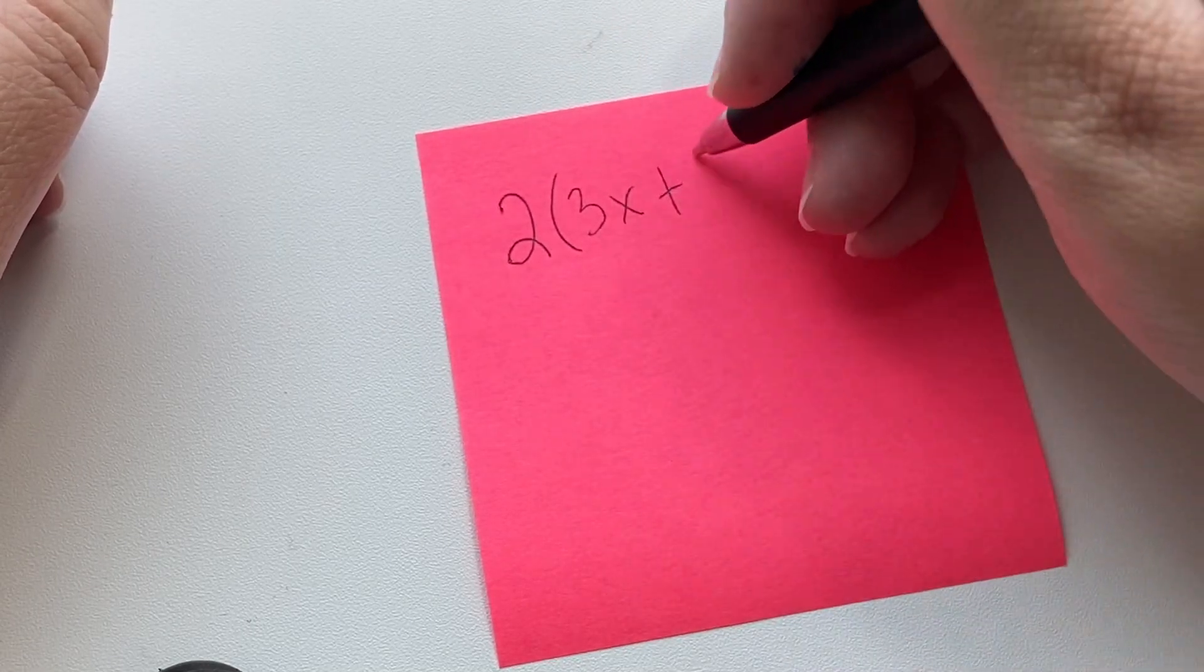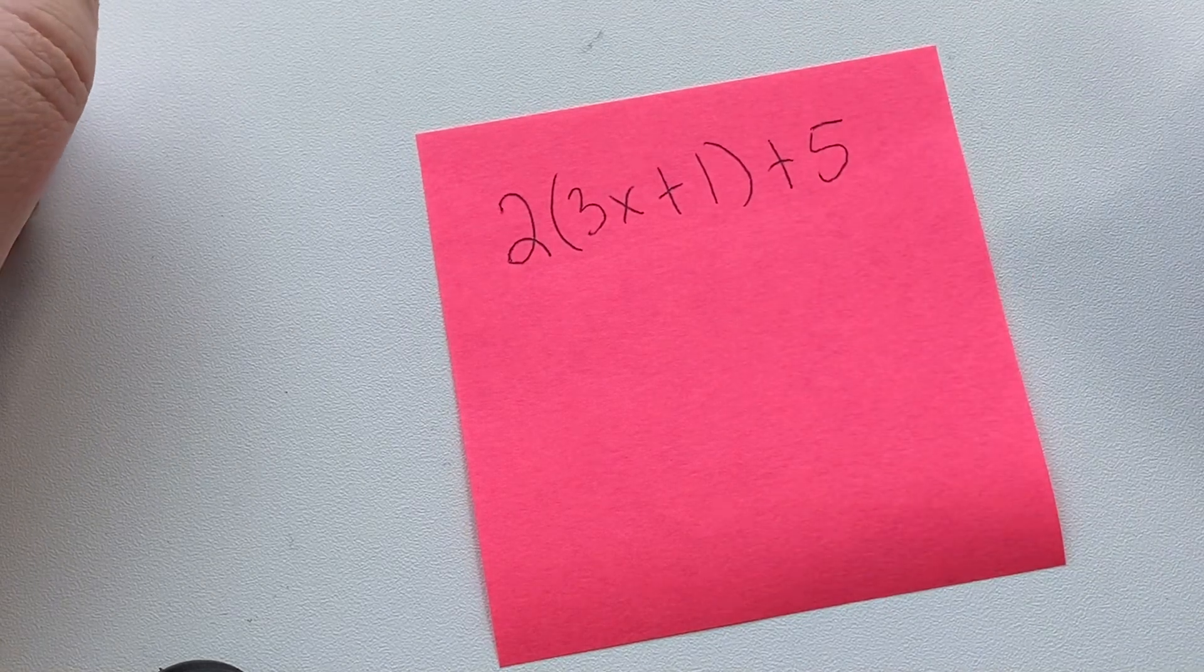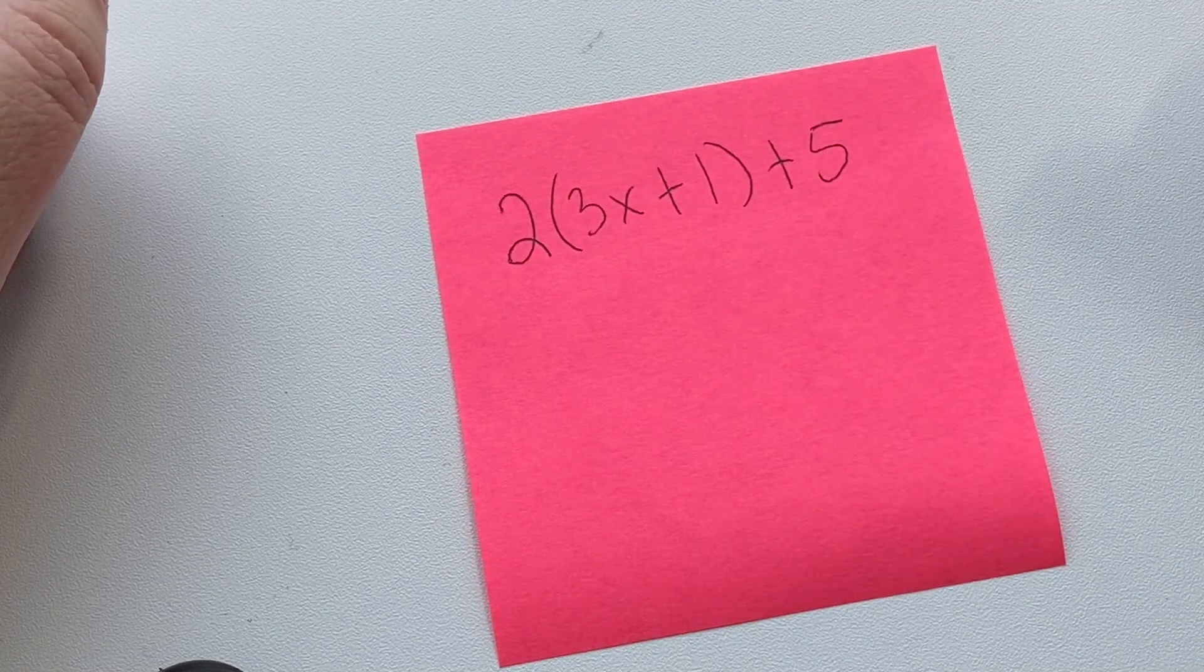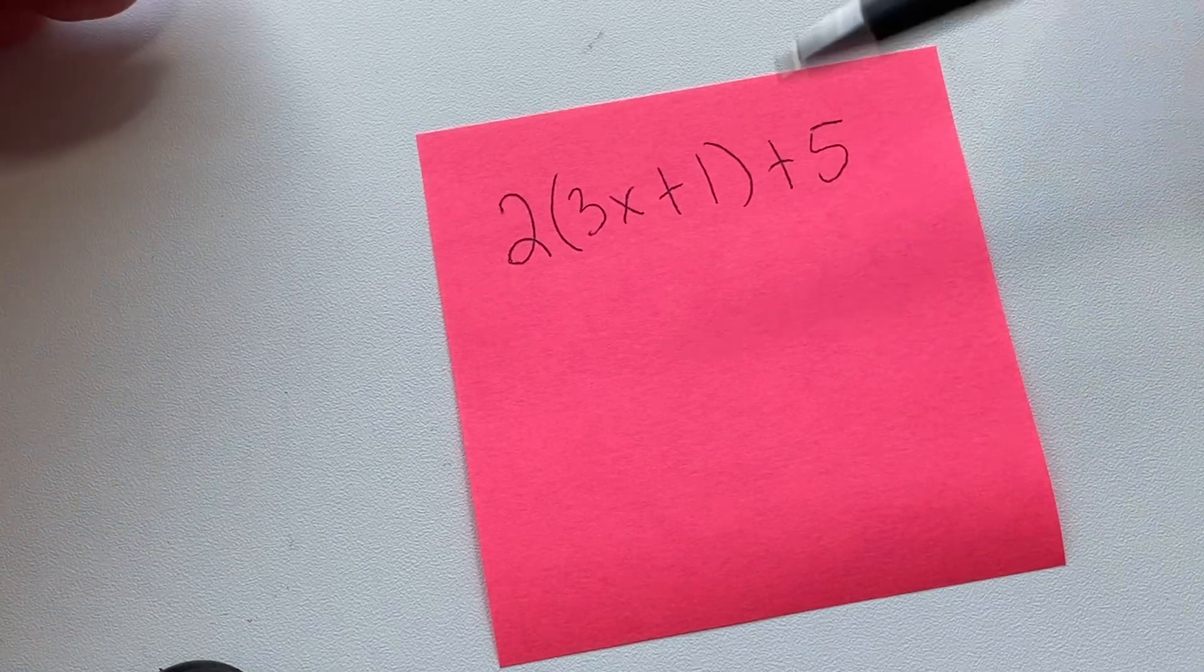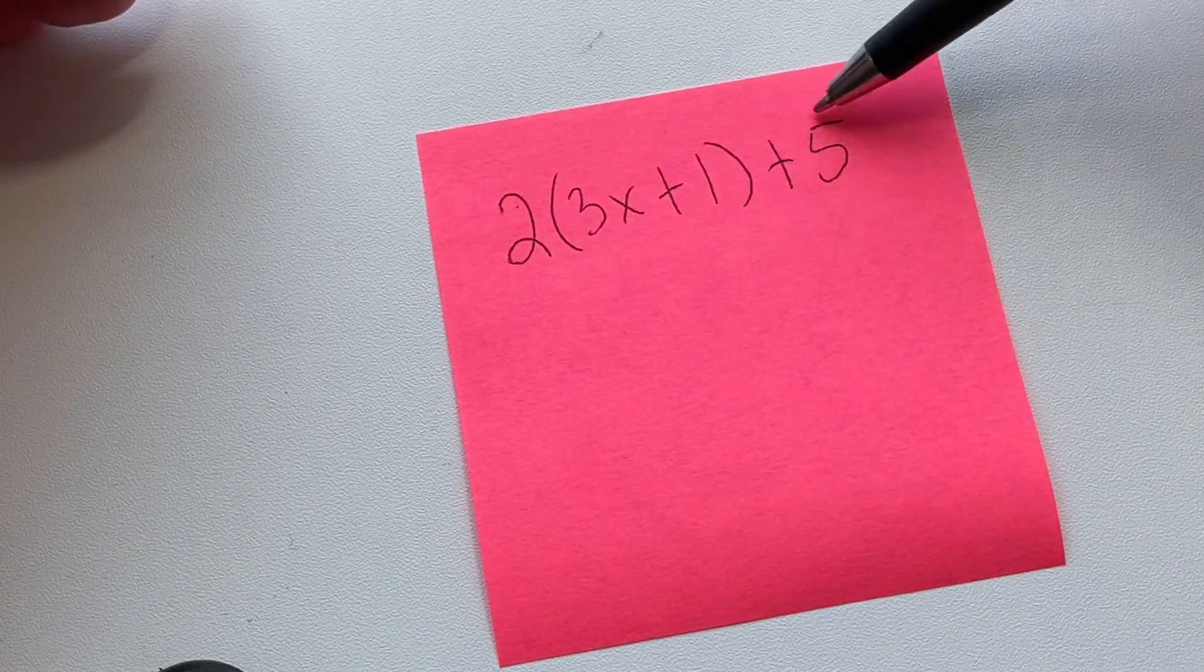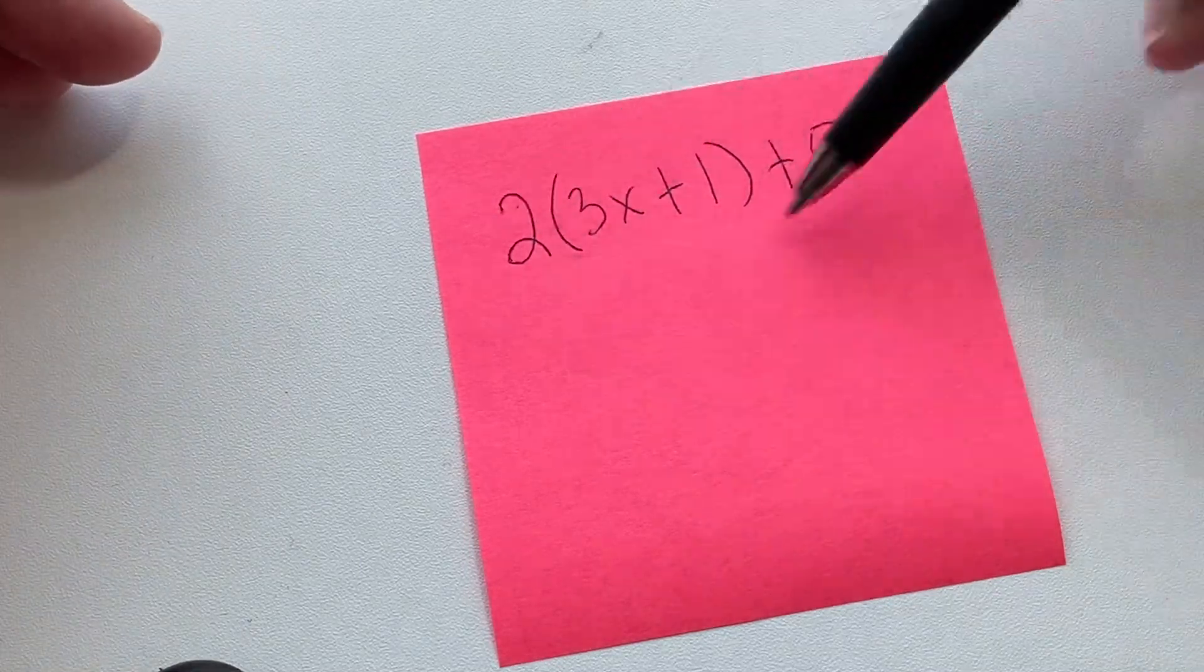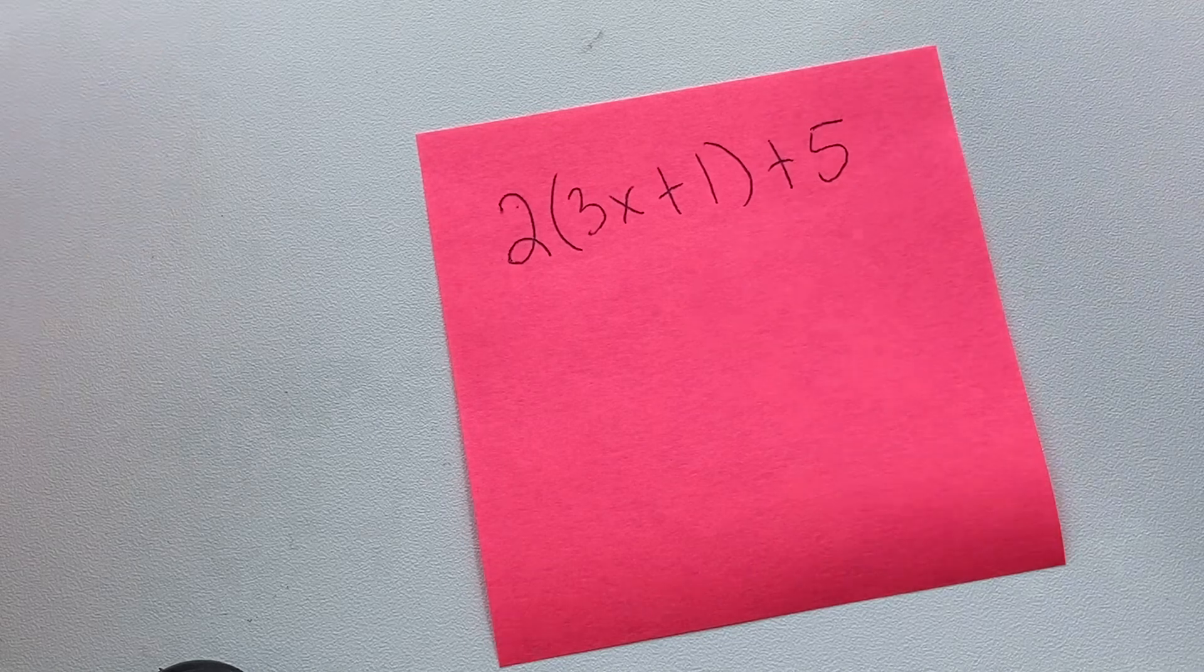times (3x+1) plus 5. We're talking about distributing within the parentheses. This means 2 times (3x+1). This plus 5 is separate—it's not related to our parentheses, so we'll deal with it later.